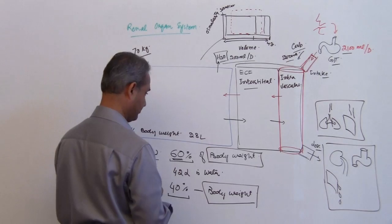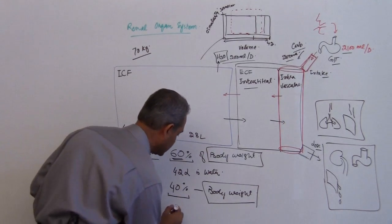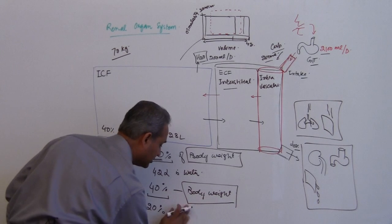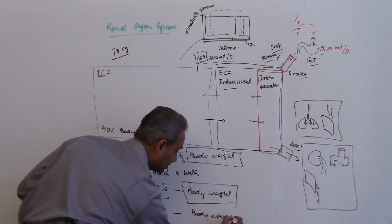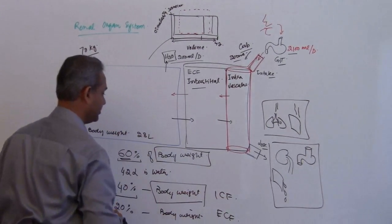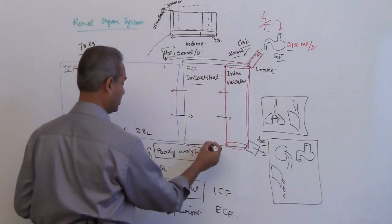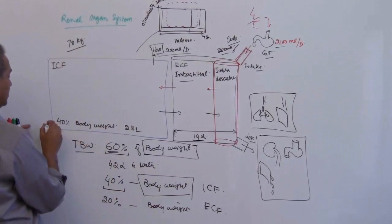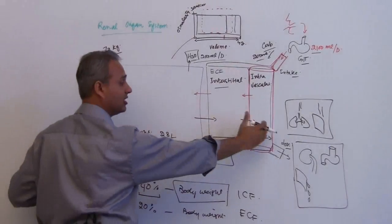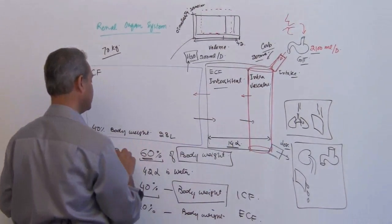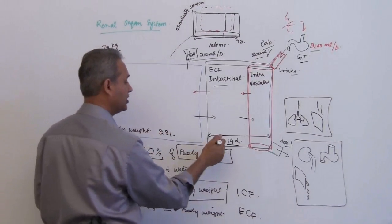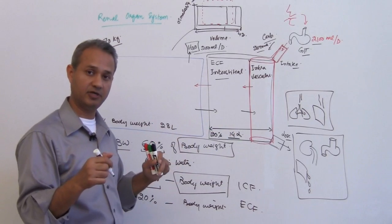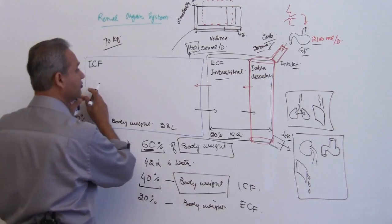The remaining fluid is 14 liters in the extracellular fluid, which is 20% of body weight. So the key rule is: 60% of body weight is total fluid volume, 40% is intracellular fluid (ICF), and 20% of body weight is in the extracellular fluid (ECF).